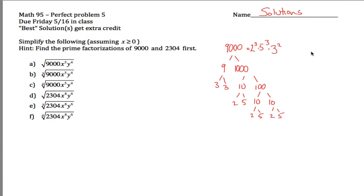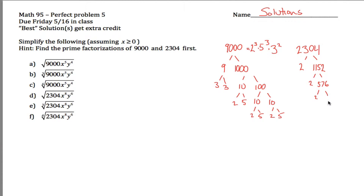We can do that same thing for 23.04. It's an even number, so it must be 2 times something. Half of 23.04 would be 11.52. That's an even number too, so it's 2 times something. Half of 11.52 is 576. Still even, so it's 2 times something. Should have just pulled out a calculator — half of 576 is 288.